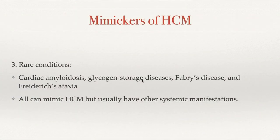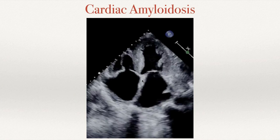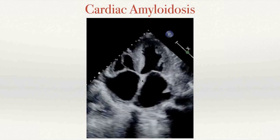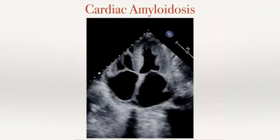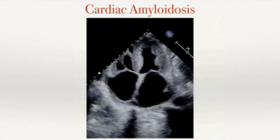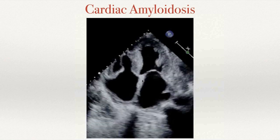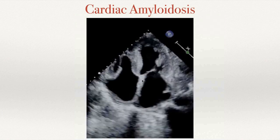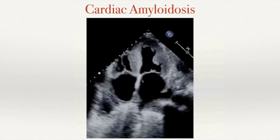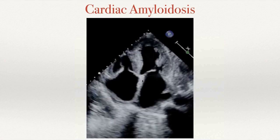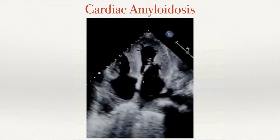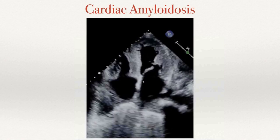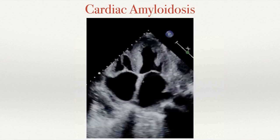Rare conditions that can mimic HCM include cardiac amyloidosis, glycogen storage diseases, Fabry's disease, and Friedreich's ataxia — all causing LV hypertrophy, but usually with other systemic manifestations that clue us into the diagnosis. A loop for a patient with cardiac amyloid shows concentric LVH usually described as having a speckling pattern, with the RV typically involved as well as biatrial enlargement.